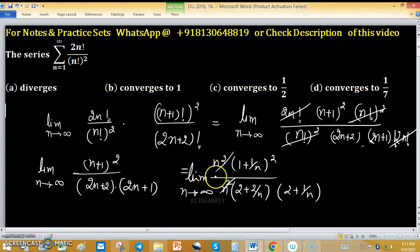So n square cancels out n square. What we have is 1 upon 2 into 2, which means 1 upon 4. 1 upon 4 is strictly less than 1. So it diverges.